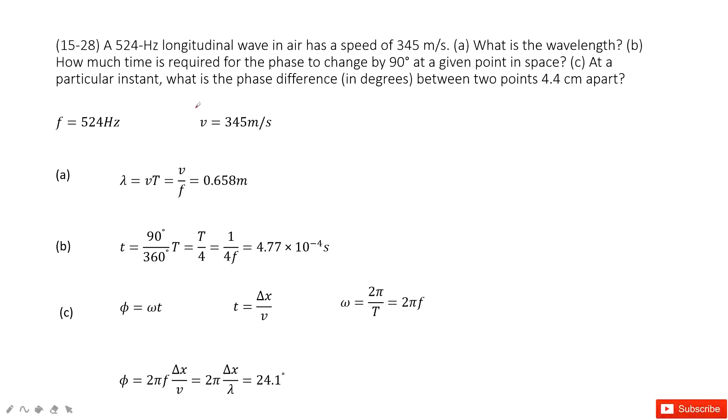In this one, we know the wave's frequency and speed. First, we need to find the wavelength. As we know, wavelength is the distance it travels for one cycle.